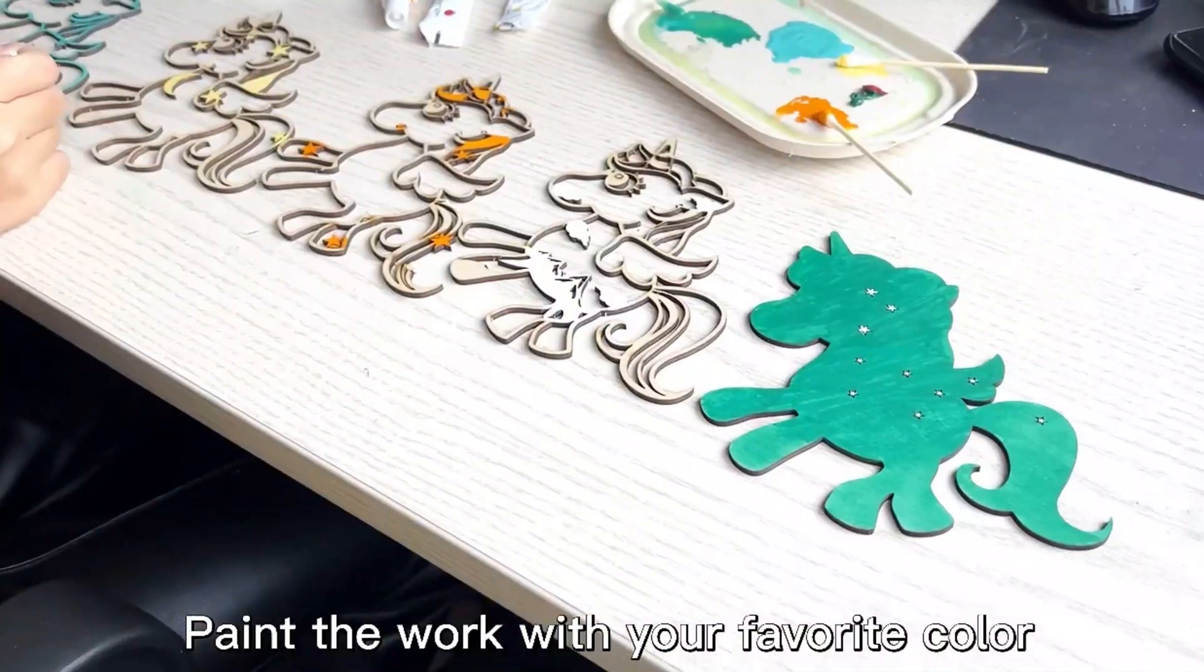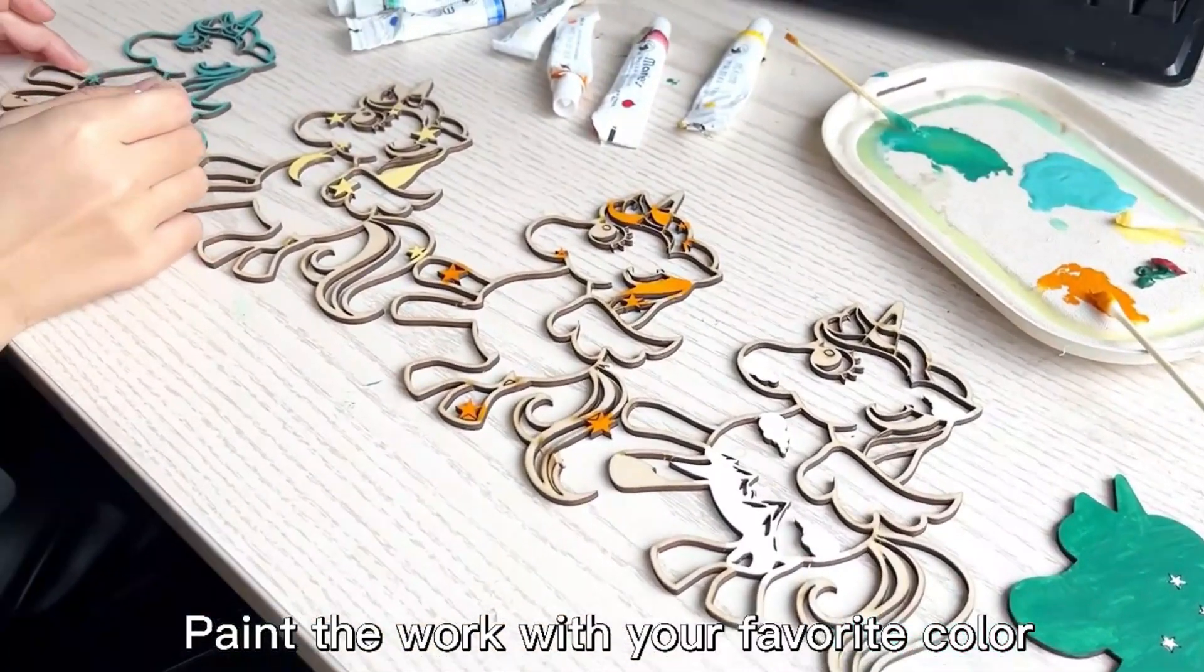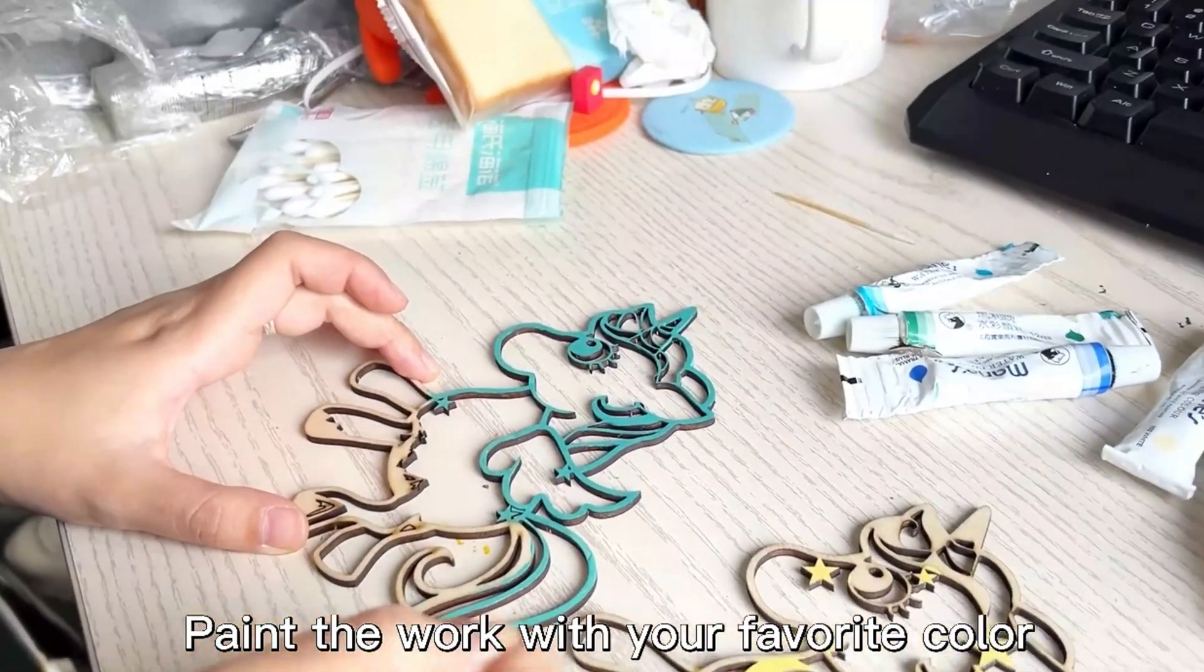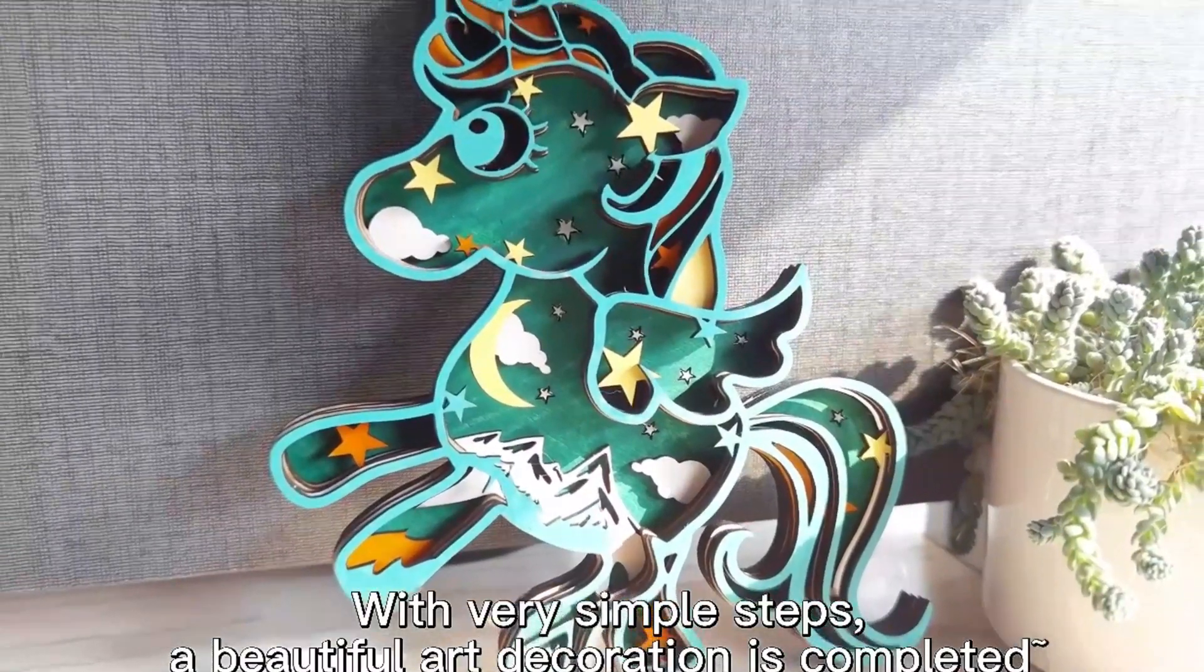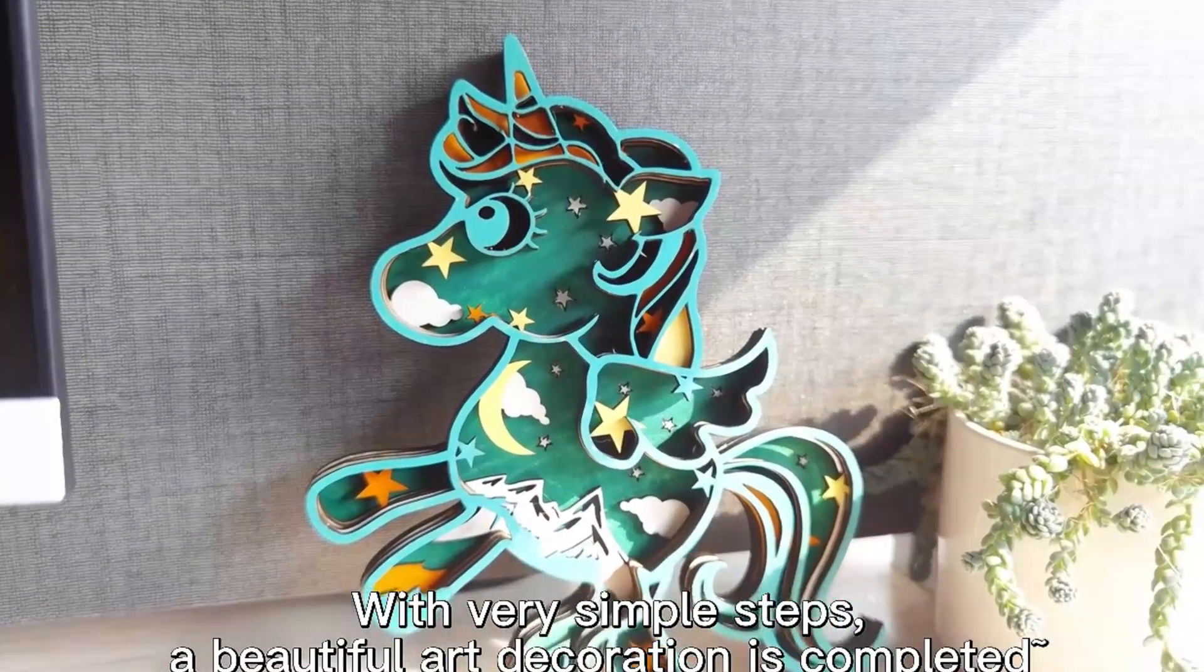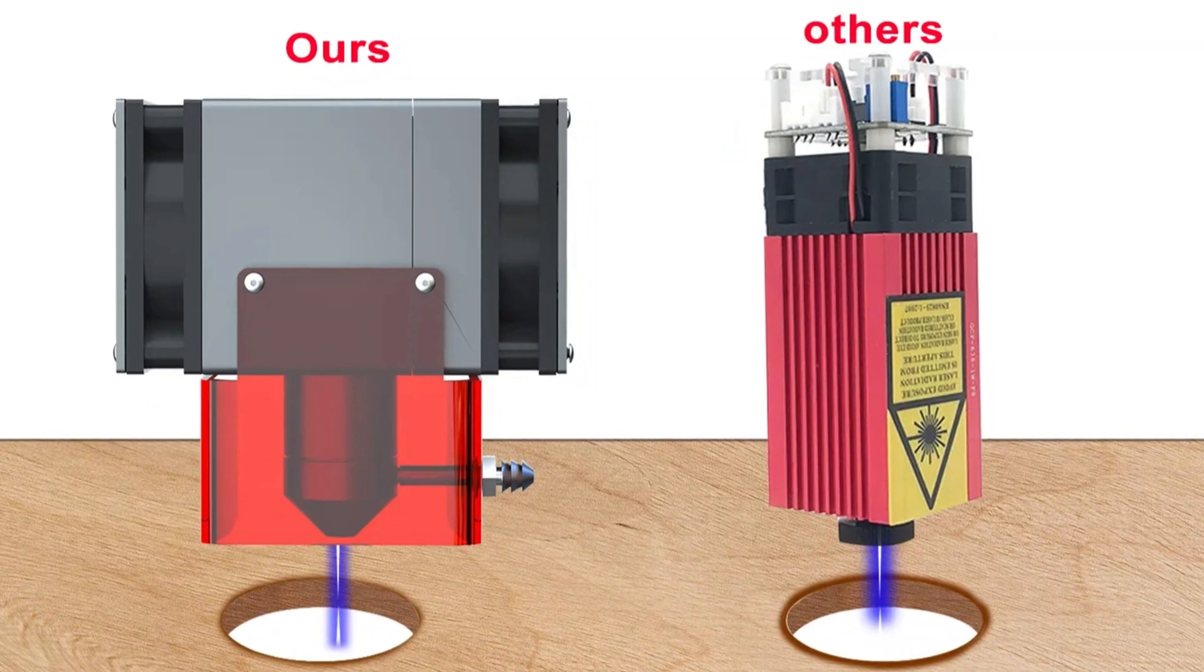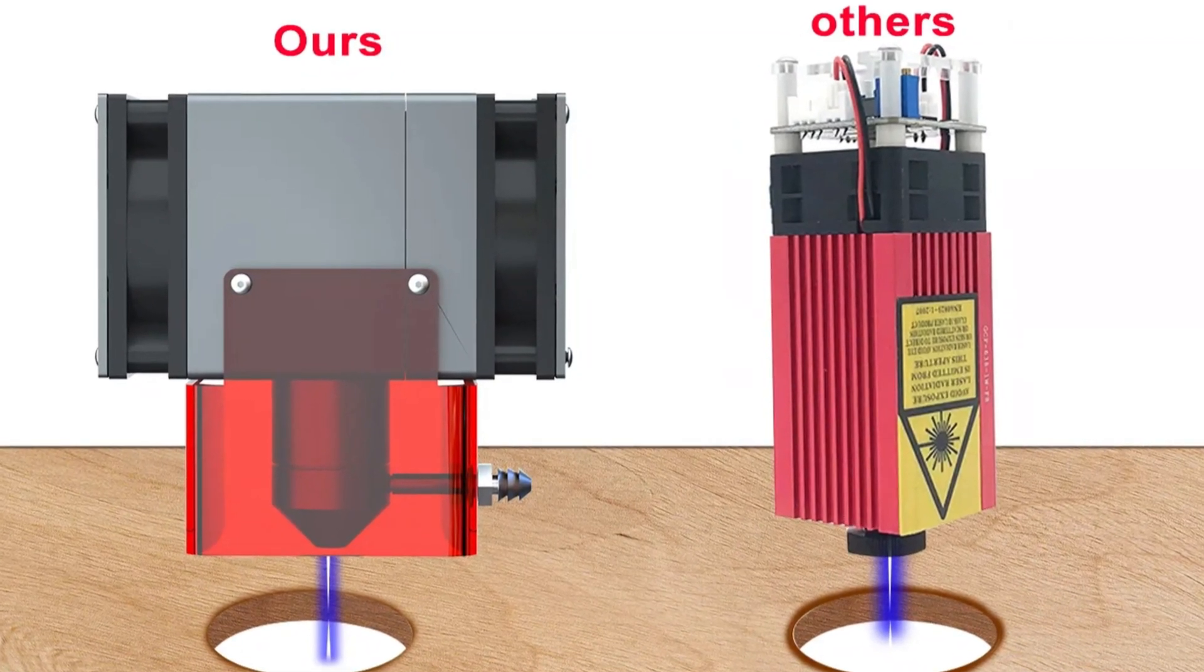The dual fan's cooling design ensures optimal heat dissipation and extends the module's lifespan. The Air Assist technology reduces yellowing on the edges of cuts and engravings, resulting in cleaner and more precise results. The 45mm fixed-focus lens eliminates the need for manual focusing, streamlining workflow.